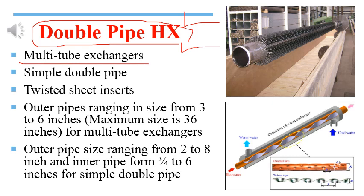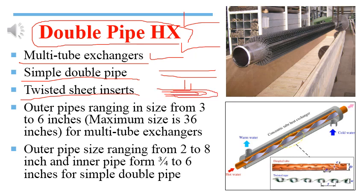The arrangements of double pipe heat exchangers include: simple double pipe, multiple tube double pipe, and twisted sheet inserts. In multiple tubes, the inner pipe is replaced by U-tubes. The simple double pipe uses a single inner pipe. The twisted sheet insert is placed in the inner pipe to cause turbulence in the fluid, which increases heat transfer.